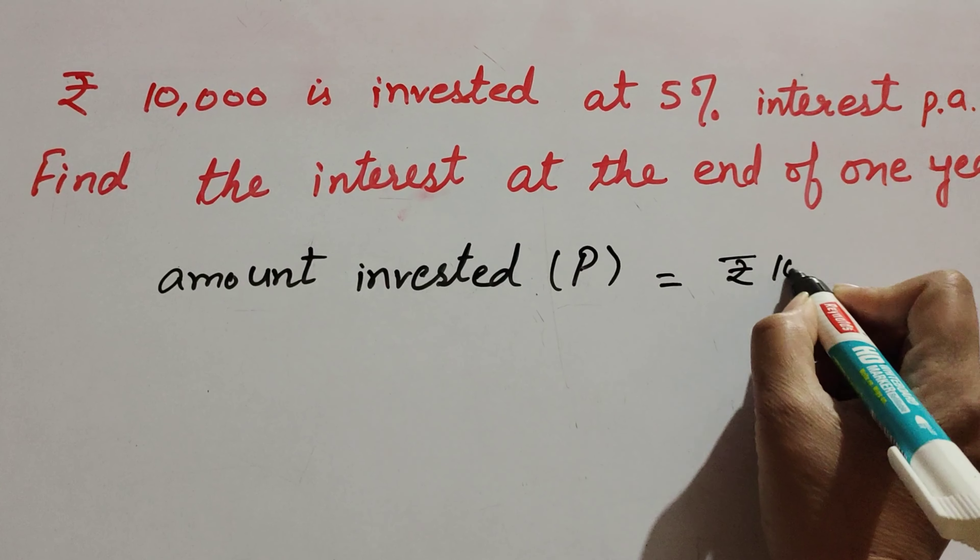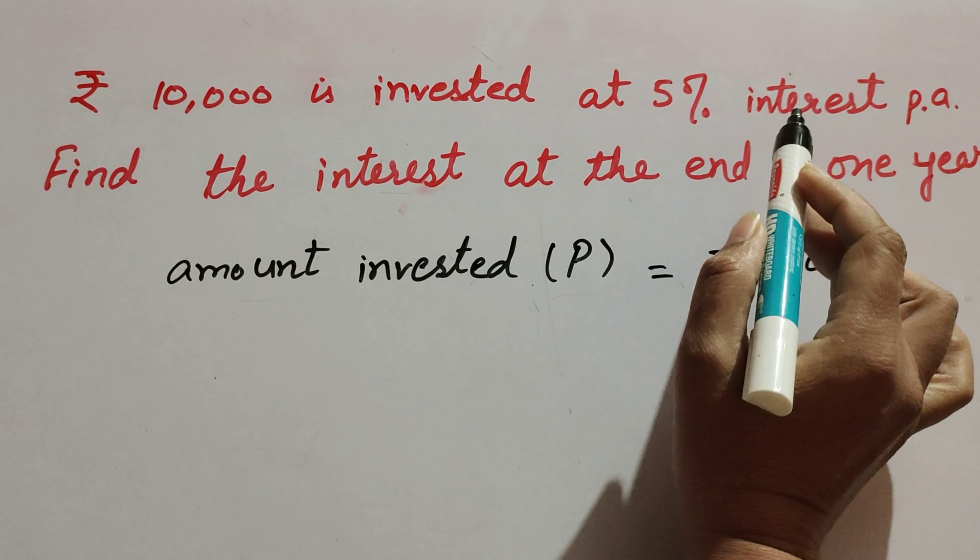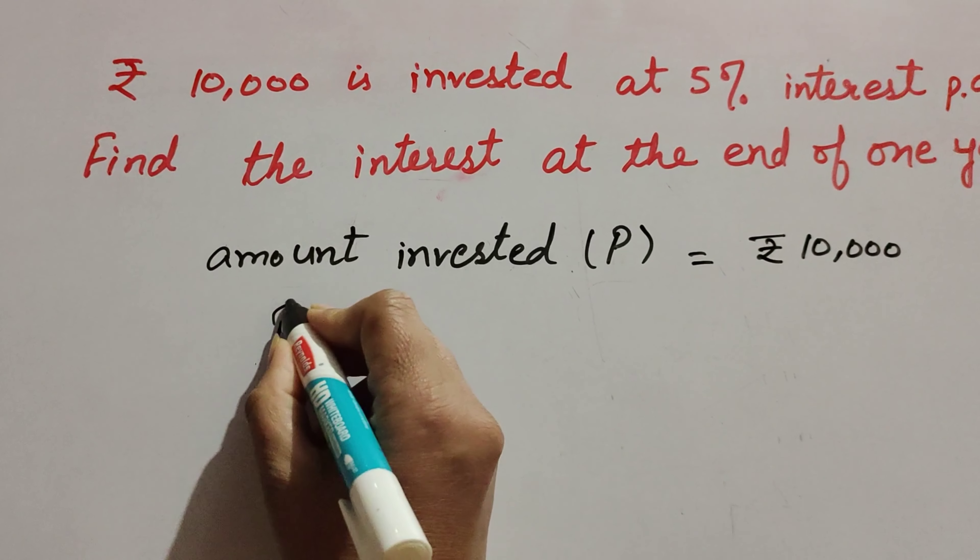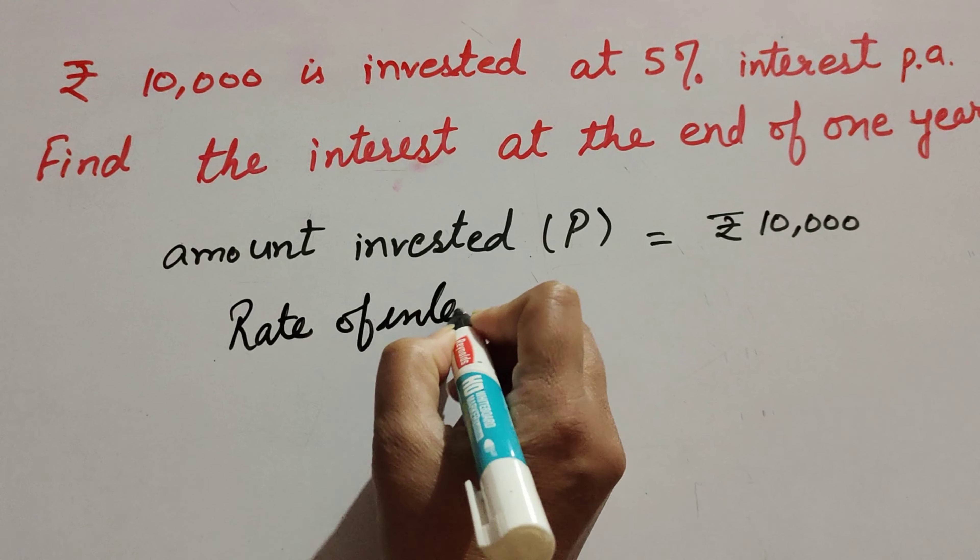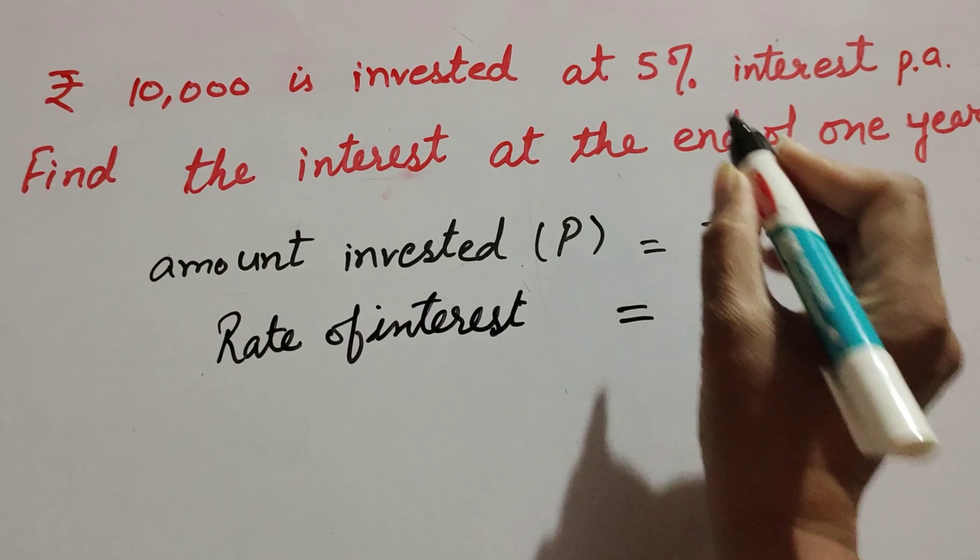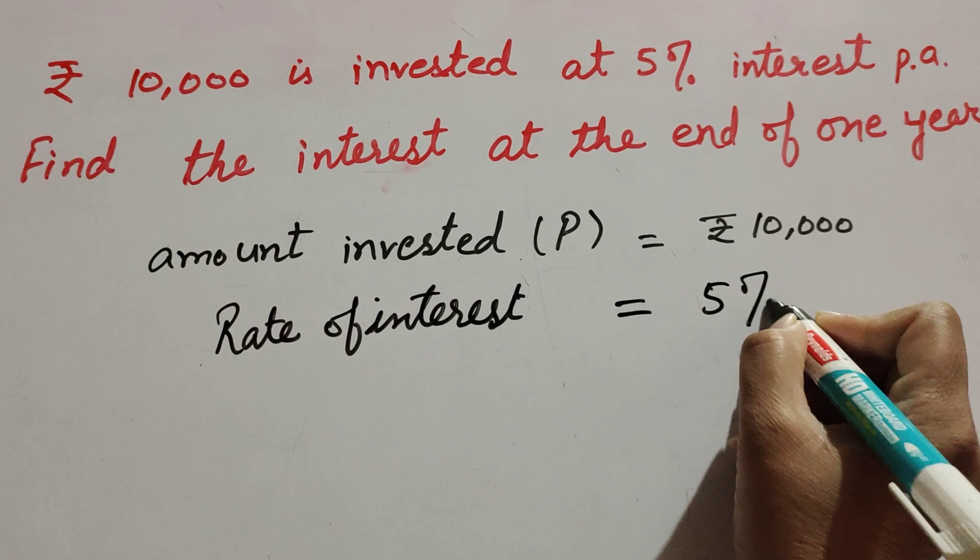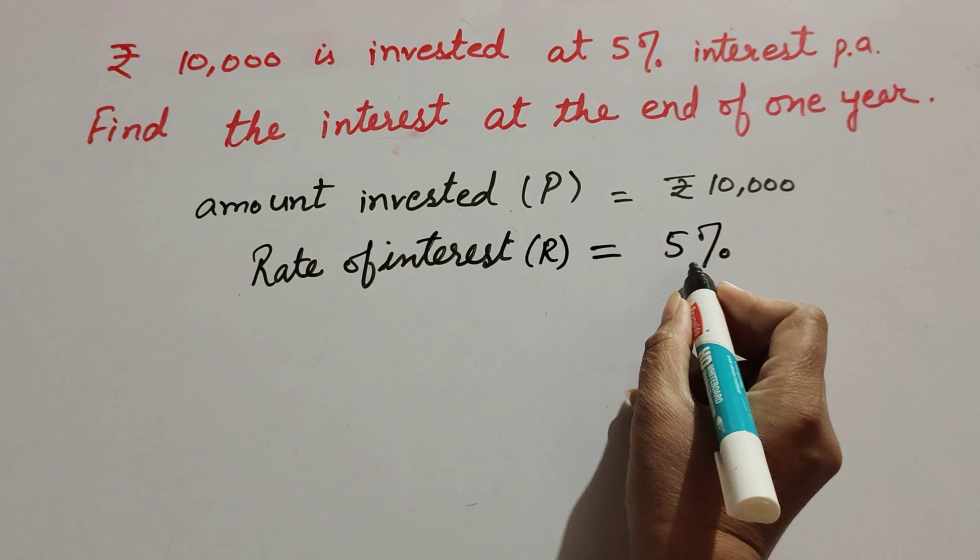Principal equals rupees 10,000. The rate of interest is 5% per annum. We write the rate of interest as R. R is the rate of interest, which equals 5%.